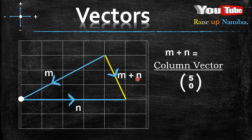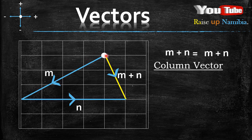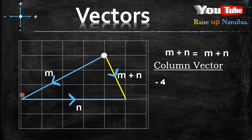Let's quickly check it in column vector form. In column vector form, if you have to write vector M as a column vector, this will be your starting point. You'll be moving one, two, three, four lines to the left, meaning because you are moving to the left, it will be negative four. And then you move one, two, three lines going downwards, so it will give you negative three. That is for vector M.